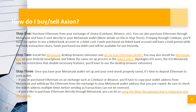You'll have to use the desktop browser extension. Step 3: Once you have your Metamask wallet set up and your seed words properly saved, it's time to deposit Ethereum to your wallet. If you've purchased Ethereum on an exchange such as Coinbase or Binance, you'll have to copy your wallet address from Metamask and withdraw the Ethereum from the exchange to your Metamask wallet address. Be sure to check the wallet address multiple times before sending, as transactions cannot be reversed. If you'd like to purchase Ethereum directly through Metamask, you can do so using their wire/fiat gateway integrated into Metamask.